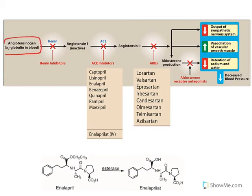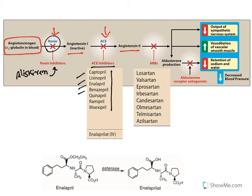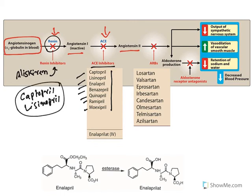Angiotensinogen is converted to angiotensin I by renin, and angiotensin I is converted to angiotensin II by ACE. A drug called aliskiren is a direct renin inhibitor that inhibits renin. ACE inhibitors all end with '-pril': captopril, lisinopril, enalapril, benazapril, quinapril, ramipril, moexipril. Most of them are prodrugs — in ester form, they need to convert to acid form to show activity — but captopril and lisinopril are the first two and are active drugs.